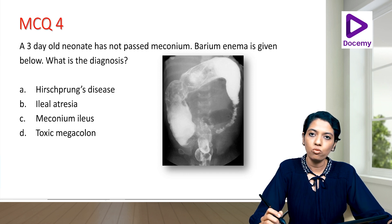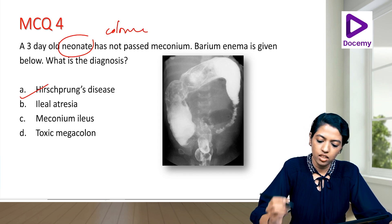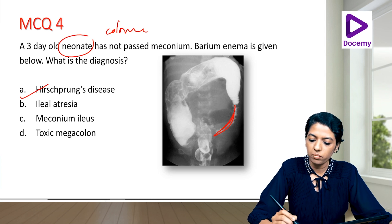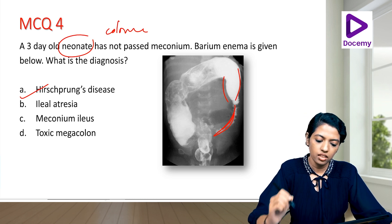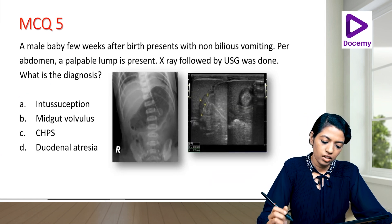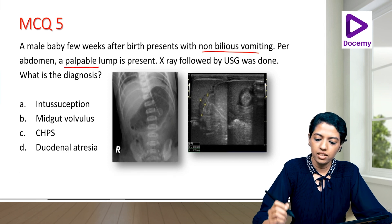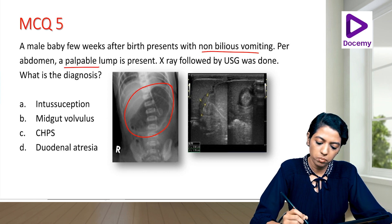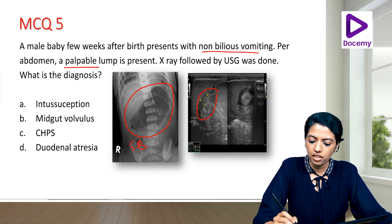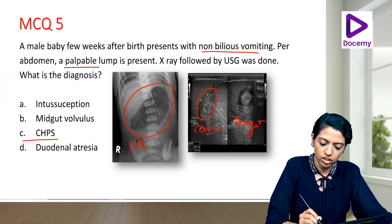MCQ 4: A 3-day-old neonate has not passed meconium; barium enema shows the narrow affected segment with dilated proximal normal segment — diagnosis is Hirschsprung's disease. MCQ 5: A male baby a few weeks after birth with non-bilious vomiting and a palpable lump on abdomen — x-ray shows single bubble; ultrasound shows cervix sign and target sign — diagnosis is congenital hypertrophic pyloric stenosis (CHPS).